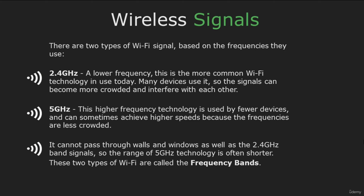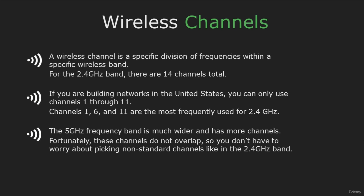The range of 5 GHz is also shorter. You will also need to know what a wireless channel is. For the 2.4 GHz band there are 14 channels. If you are building networks in the US, you can only use channels 1 through 11. You can also use the 5 GHz frequency band, which is much wider and has more channels that do not overlap.